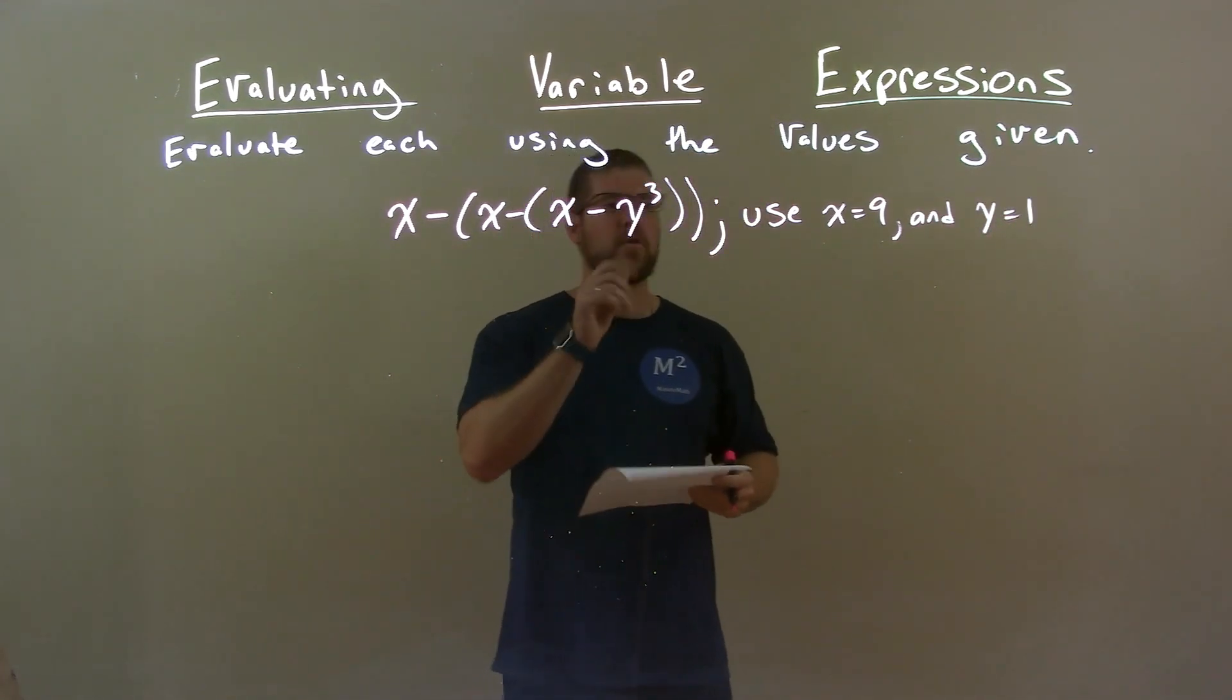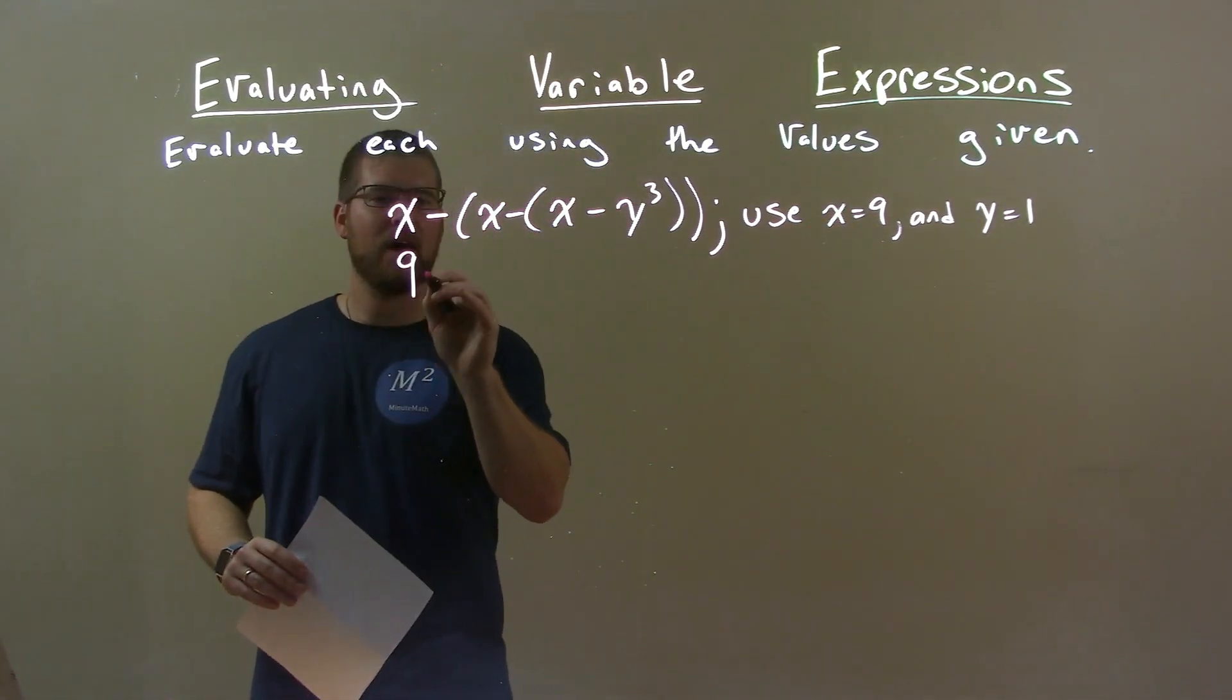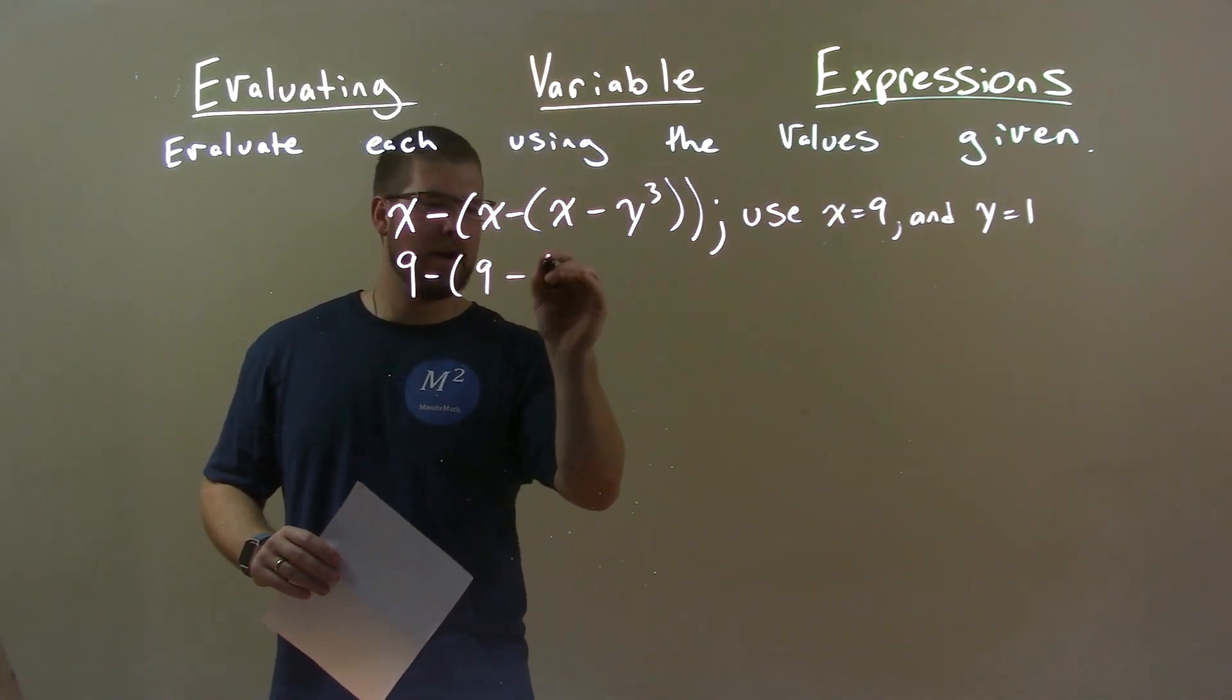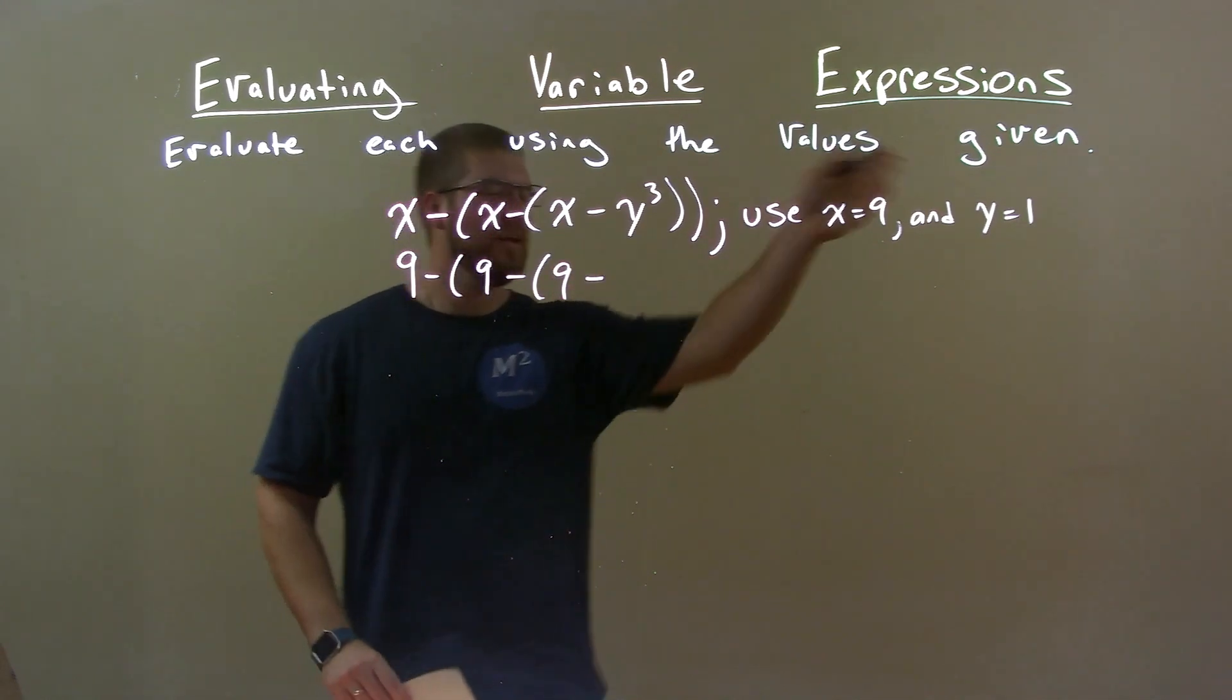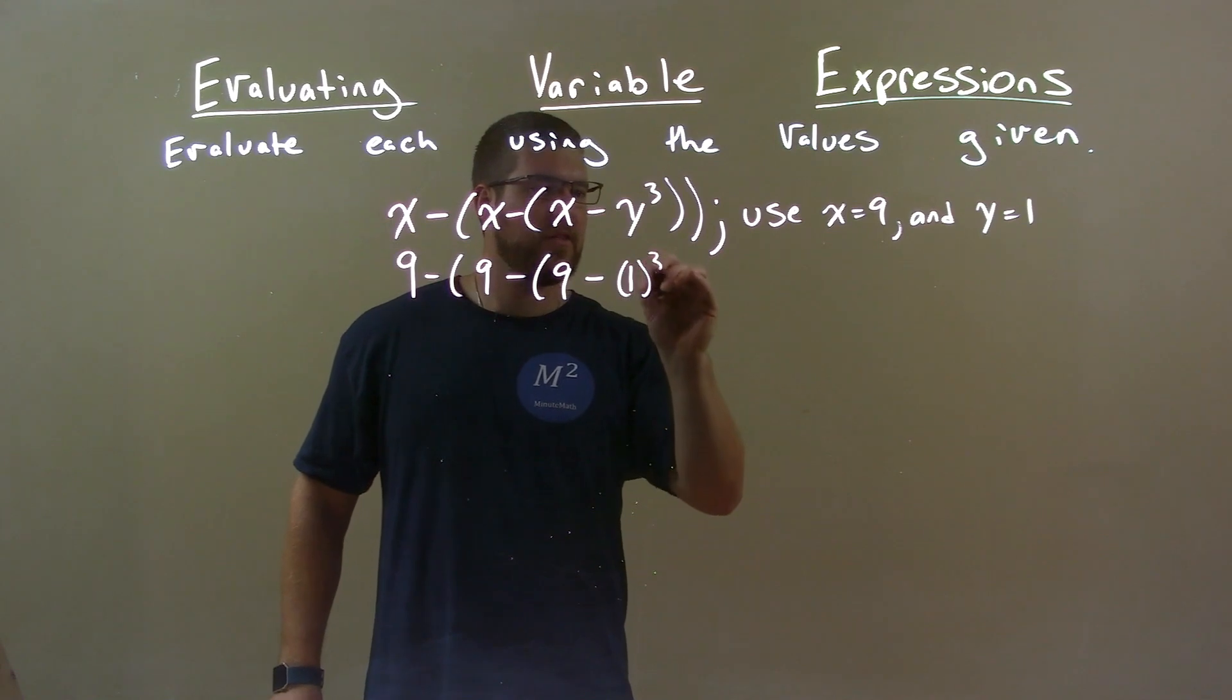All right, first step, putting values for their variables. x is 9. 9 minus 9 minus 9 minus, excuse me, y to be 1. 1 to the third power.